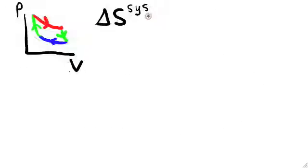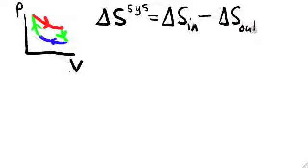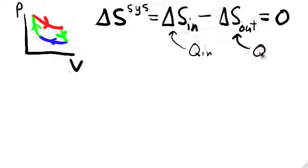Now let's return to the Carnot engine and analyze it using entropy. We can write the change in entropy for the system over one complete cycle as the difference between delta S in and delta S out. Since entropy is a state function, this difference must be zero. Delta S in consists of all the positive contributions to entropy change coming from heat flowing into the system. Likewise, delta S out consists of all the negative contributions coming from heat leaving the system.